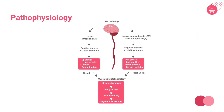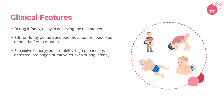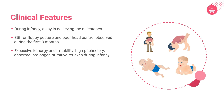The schematic representation clearly explains the pathophysiology of cerebral palsy. The symptoms begin in infancy itself, with delay in achieving milestones. Stiff or floppy posture and poor head control are observed during the first three months. Excessive lethargy and irritability, high-pitched cry, and abnormal prolonged primitive reflexes are also observed in cerebral palsy patients during infancy.